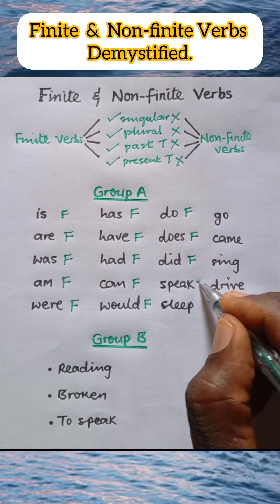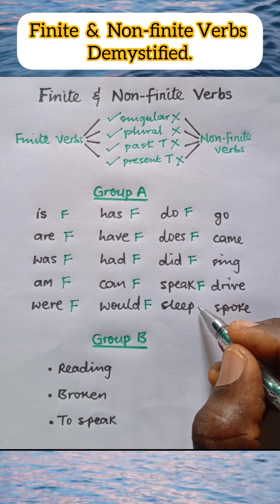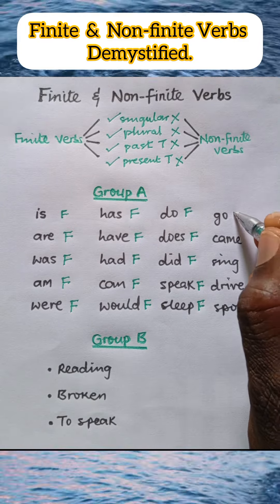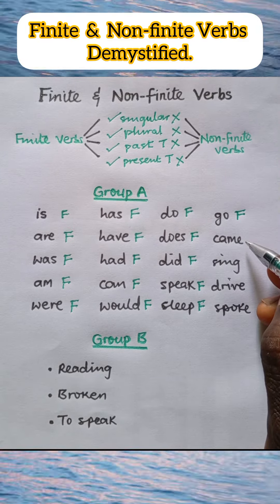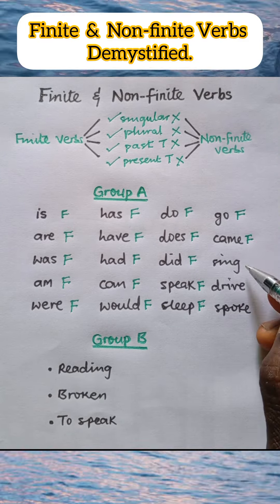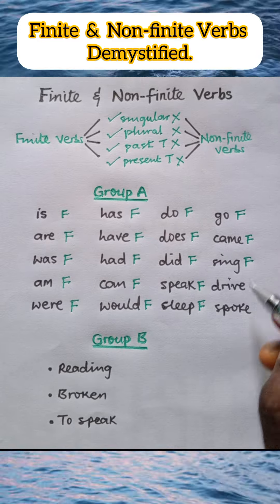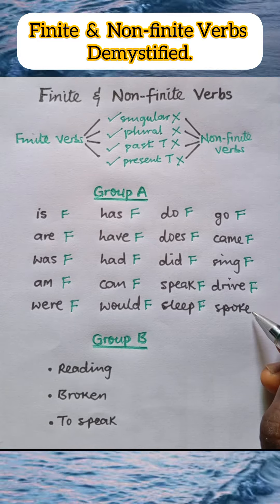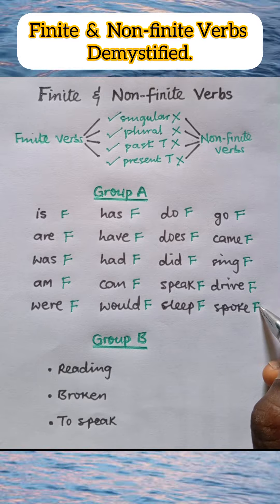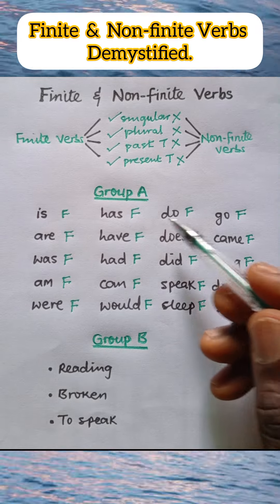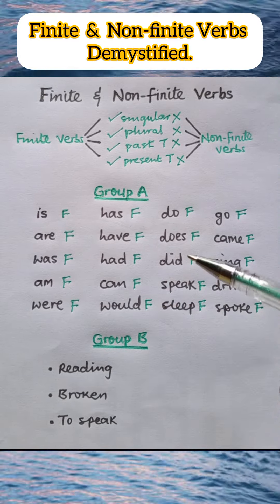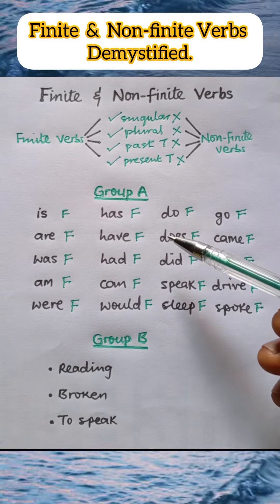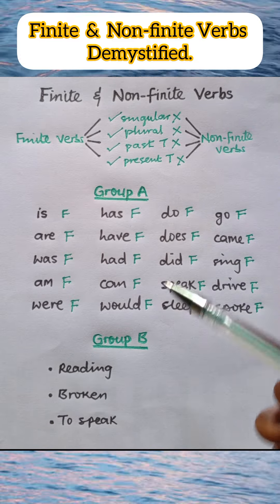Speak is present tense, plural — finite. Sleep is present tense, plural — finite. Go is present tense — finite. Came is past tense — finite. Sing is present tense — finite. Drive is present tense — finite. Spoke is past tense — finite. So any verb in the English language that can exist as singular or plural, past or present, is a finite verb.